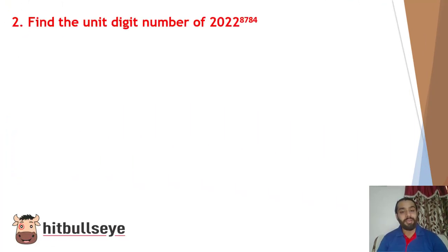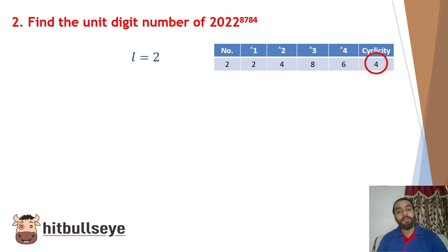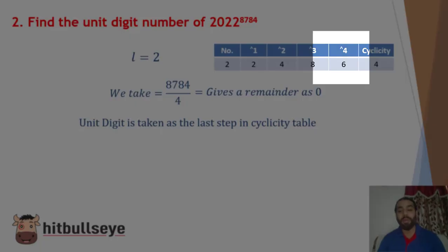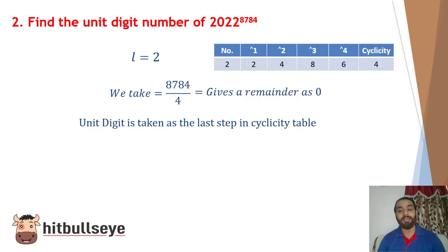In the next question, find the unit digit number of 2222 raised to the power 8784. Now, with a similar concept, we take unit digit as 2, and we know that cyclicity of 2 is 4 only. Now we have to divide 8784 by 4. Writing this, we will get a remainder as 0. Now, in the previous question, we have seen that we used the formula L raised to the power R, where R was the remainder which we get after dividing the expression by the cyclicity. So what will we do here? We know that when the remainder is 0, the unit digit is taken as the last step in cyclicity table. So in our cyclicity table, the last step was 6. In raised to the power 4, you can see that we have 6. So in these type of questions, whatever unit digit is in the last step of the cyclicity table, that is our answer. So easily, you can straight away write that the unit digit will be 6 for this expression.